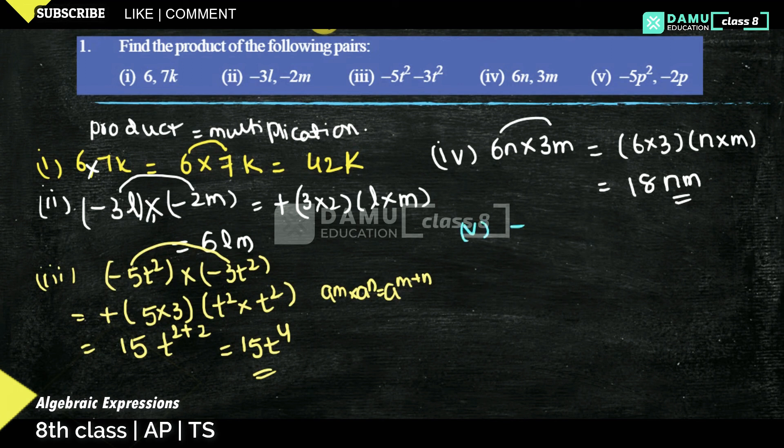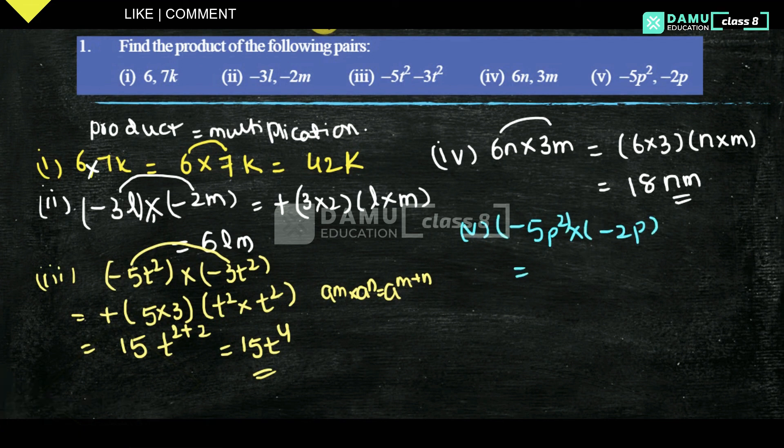So our fifth one is -5p² into -2p. So first multiply with the minus into minus, it will become plus 5 with 2, that is 5 into 2, into p² into p. What are the variables? That one we have to multiply.